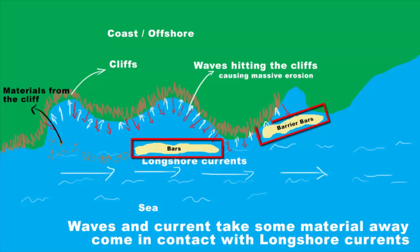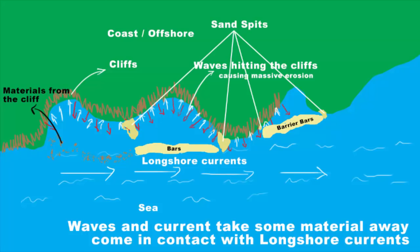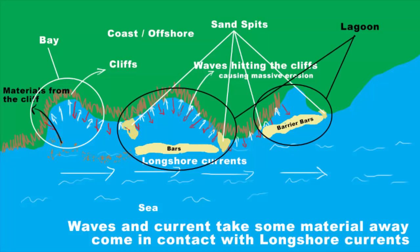Sand spits also get developed, connected to the headland bay. These barrier bars and spits together block the mouth of a bay, and that's how lagoons are formed. Without barrier bars and spits, this area is called a bay. With their presence, it is called a lagoon. With time, this lagoon gets filled up with sediments from the land, giving rise to a coastal plain.